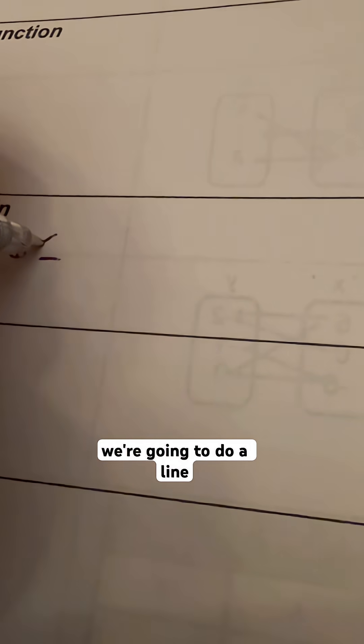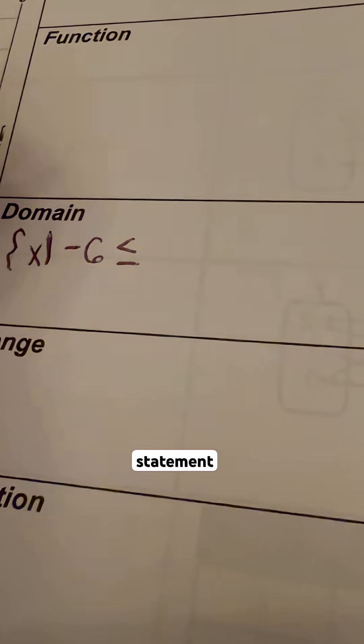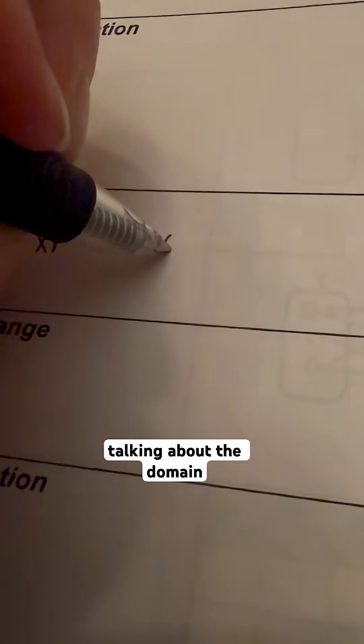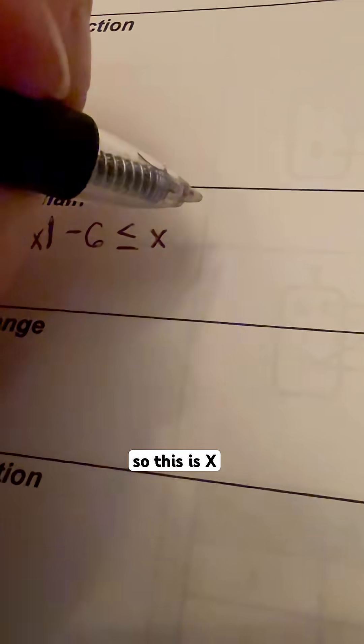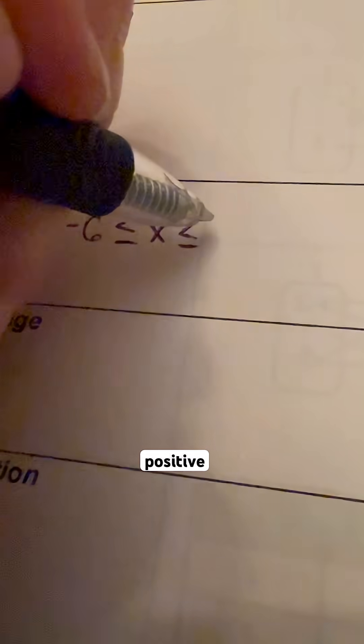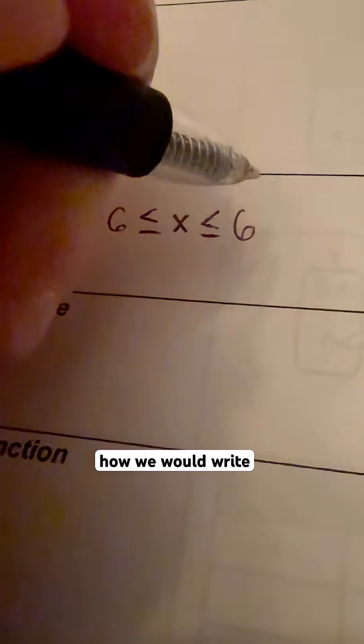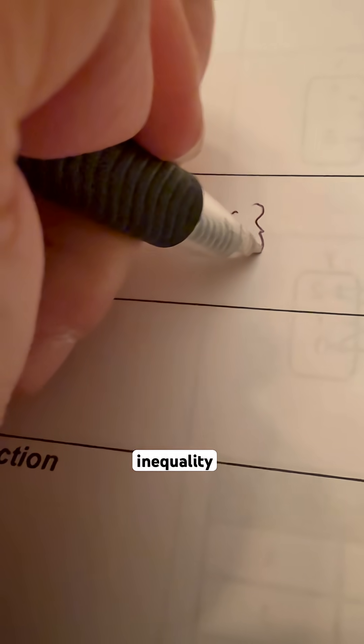And now because it is inclusive of that negative 6, we're going to do a line underneath the inequality statement. We're going to put x because we're talking about the domain, so this is x. And then it goes up to and including that positive 6. So that's how we would write the inequality statement.